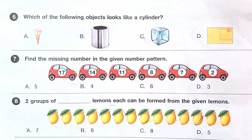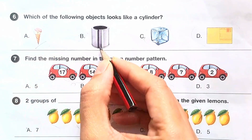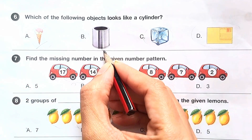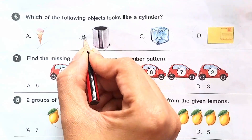Question number 6: which of the following objects looks like a cylinder? This one is in cone shape. This is the cylinder. So the answer is option B.